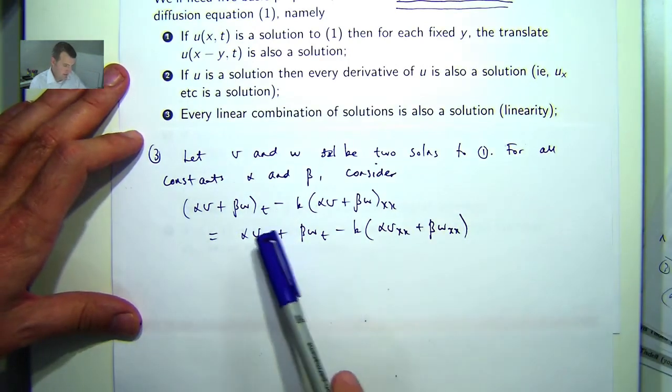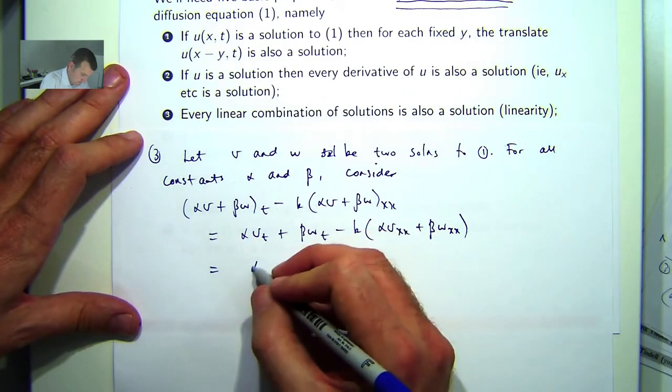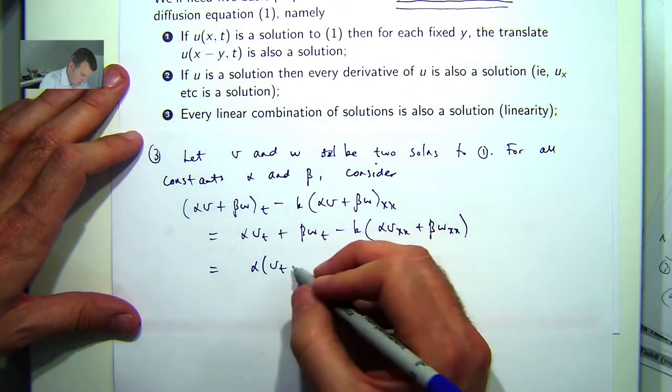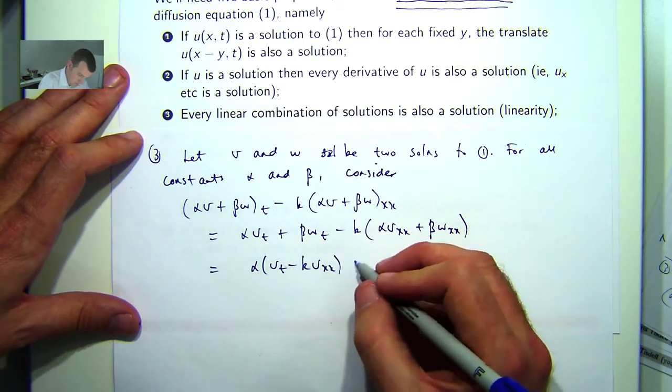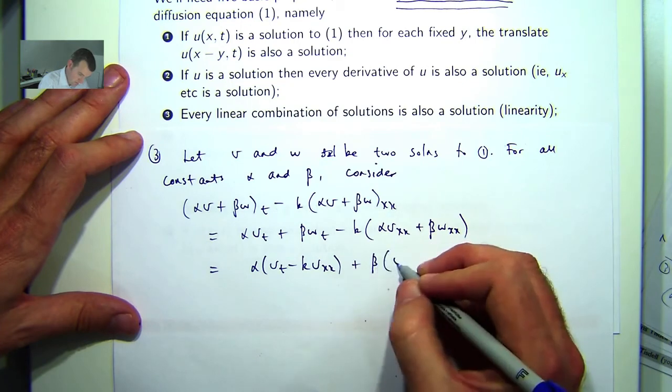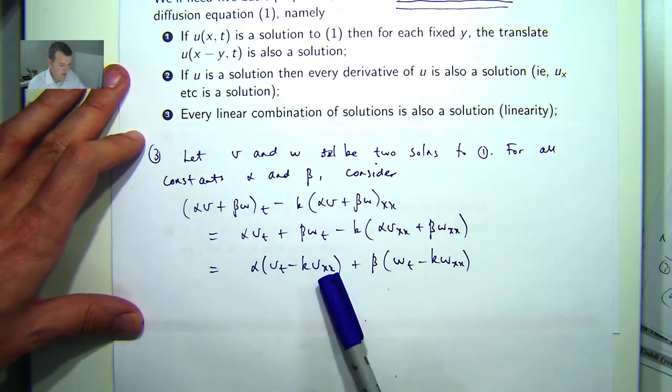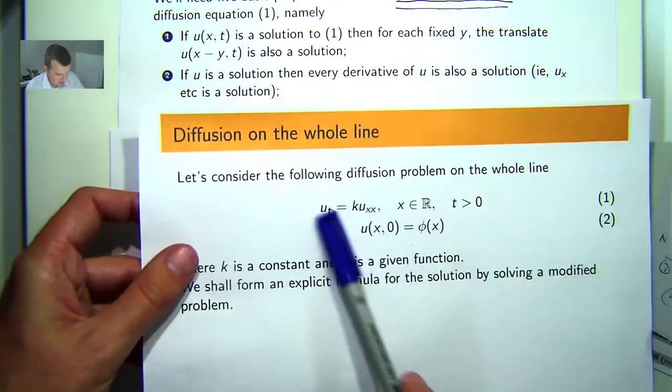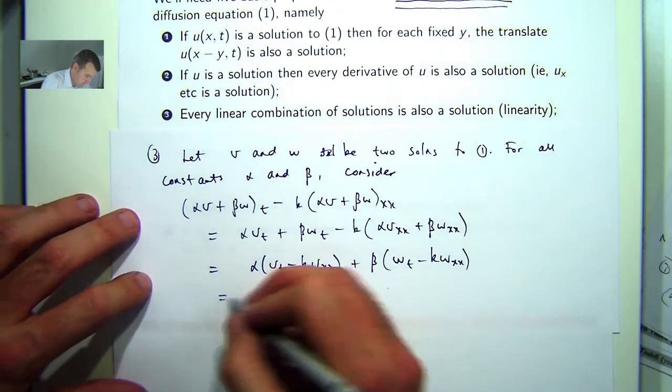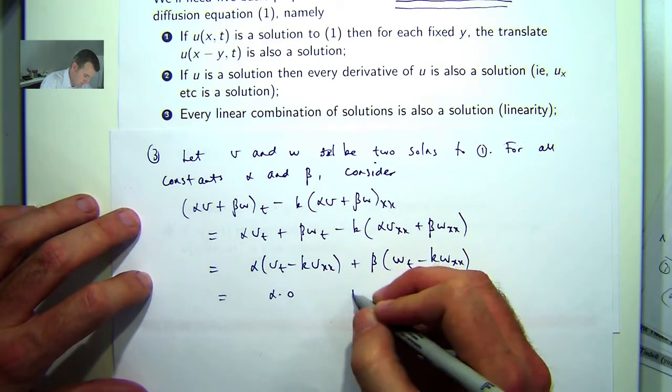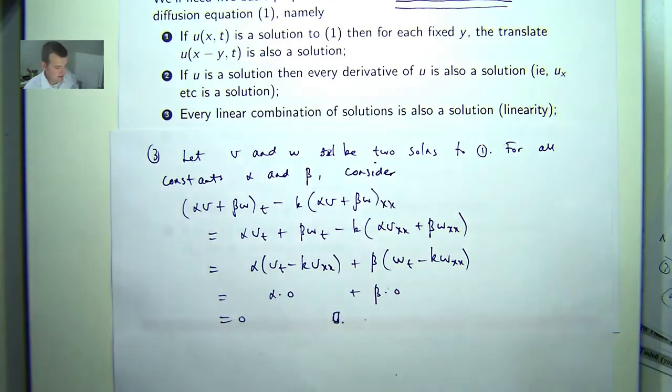Remember I can team this up with this and team that up with that. Now this is 0 because v is a solution to 1. So that's proof 3 then.